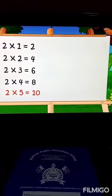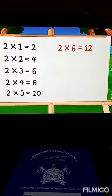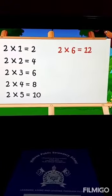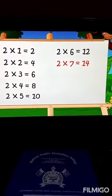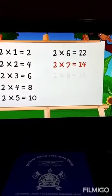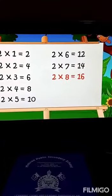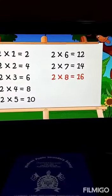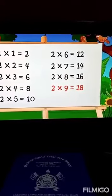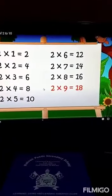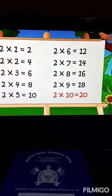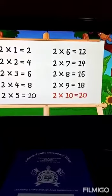Two fives are ten. Two sixes are twelve. Two sevens are fourteen. Two eights are sixteen. Two nines are eighteen. Two tens are twenty.